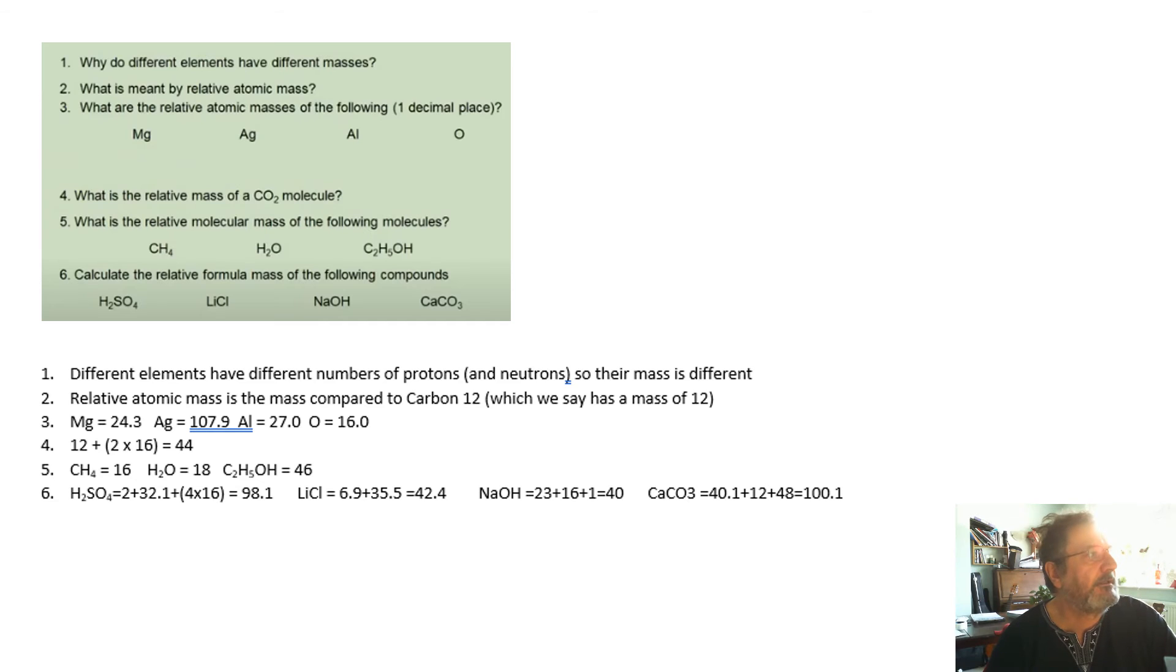Why do elements have different masses? Because they've got different numbers of protons and neutrons. I mean, the electrons don't really count. Their mass is zilch. It's the protons and the neutrons which is important. The relative atomic mass is the mass compared to carbon 12, which we say has a mass of 12.